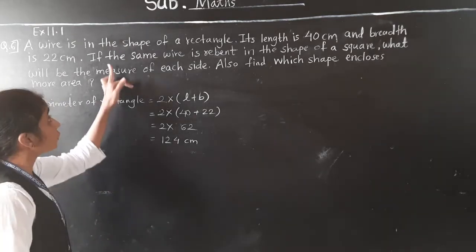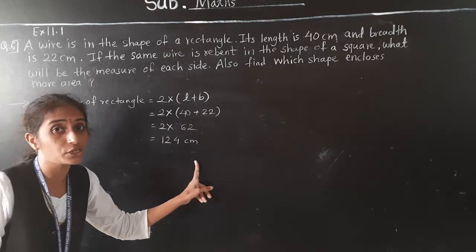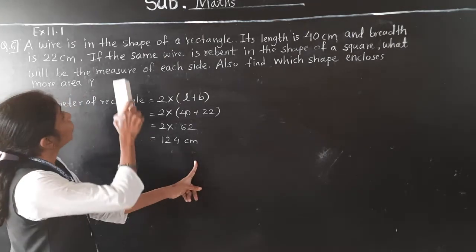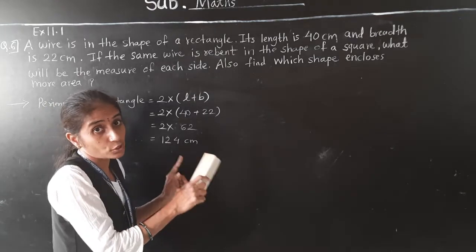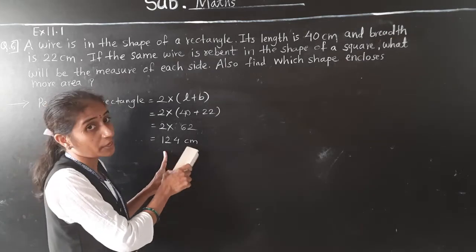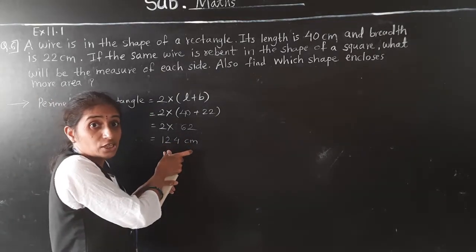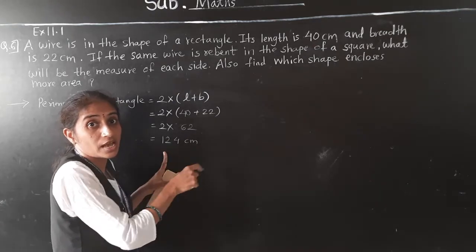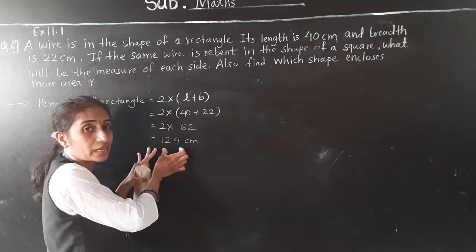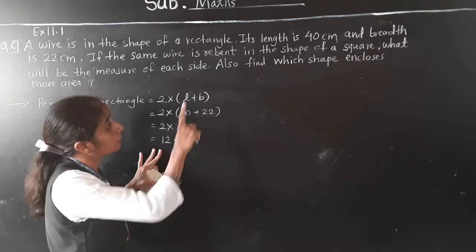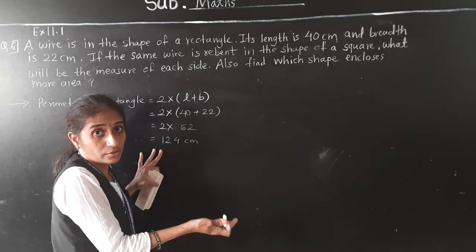If the same wire is rebent into the shape of a square, since the same wire is used, the perimeter of the square will be the same as the perimeter of the rectangle — 124 cm. Same wire means same total length, only the shape changes from rectangle to square.